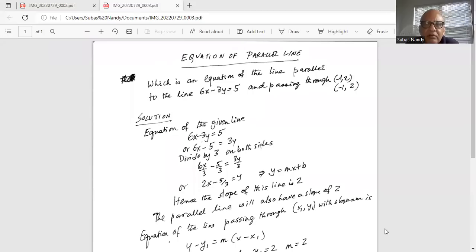How are we doing everybody? This is Dr. Nandi. Today we are going to talk about the equation of parallel lines. I'll share my screen with you, which is an equation of the line parallel to the line 6x minus 3y equal to 5 and passing through minus 1 comma 2.